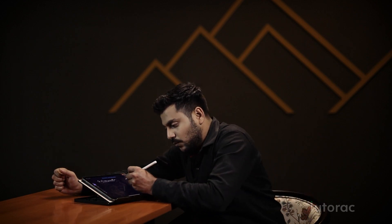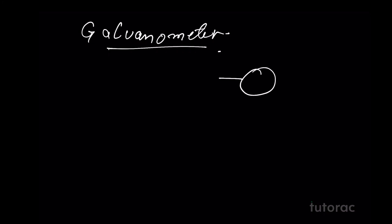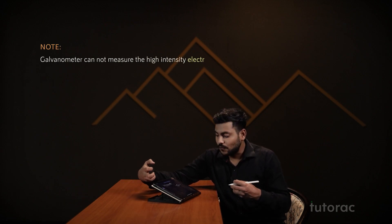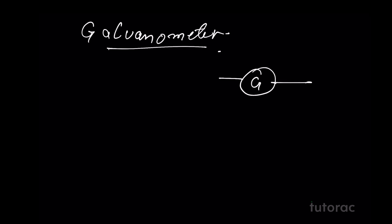Actually, the galvanometer that we usually draw is highly sensitive. It cannot measure or tolerate current of high intensity. It can measure the current up to certain milliamperes only. Thus, to measure current of high intensity, we use a device called ammeter.